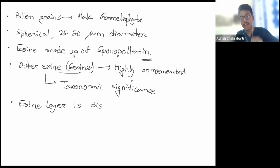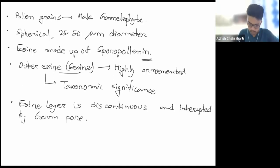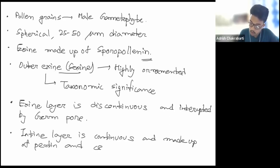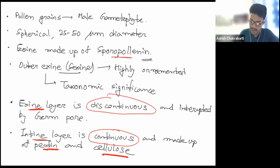The exine layer is discontinuous and interrupted by germ pores, while the intine is a continuous layer. The intine is made up of pectin and cellulose. To summarize: the intine is continuous and composed of pectin and cellulose; the exine is discontinuous and composed of sporopollenin; and the exine is interrupted by germ pores, also known as apertures.